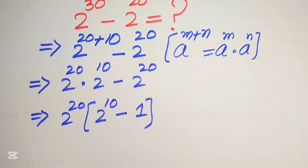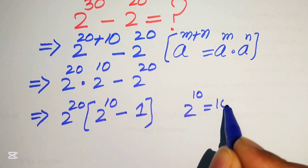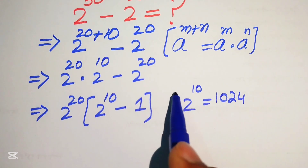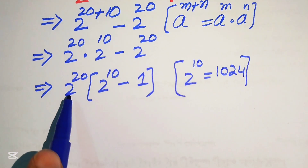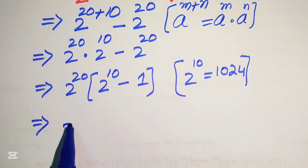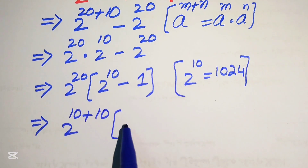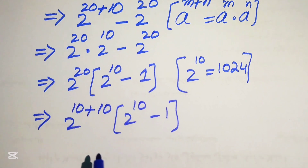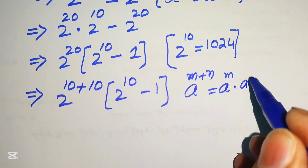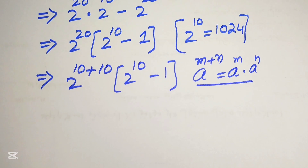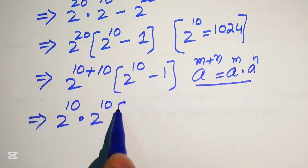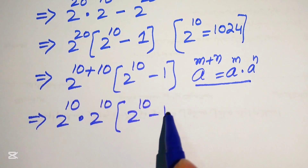We know that 2 to the power of 10 equals 1024. We will replace 2 to the power of 10 with 1024, but first we need to break 2 to the power of 20. We write 2 to the power of 20 as 2 to the power of 10 plus 10, and apply the exponent law again to write it as 2 to the power of 10 multiplied by 2 to the power of 10, into 2 to the power of 10 minus 1.